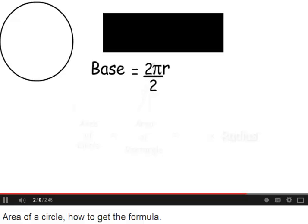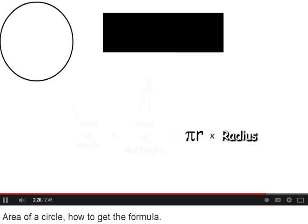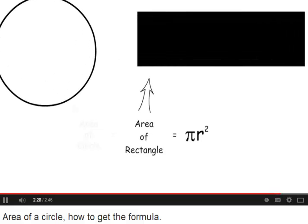But we want half of that. So the 2's will reduce and we are left with the length of the base of our rectangle to be pi times radius. Multiplying that by the height, which is also r, we are left with the area of our rectangle to be pi r squared, which is equivalent to the area of the circle.